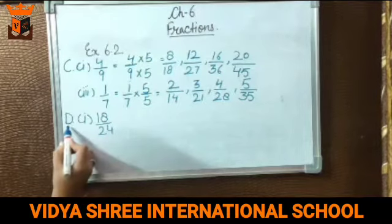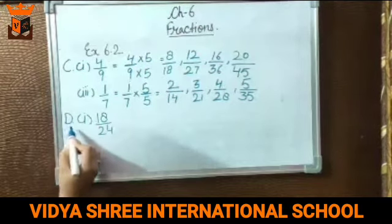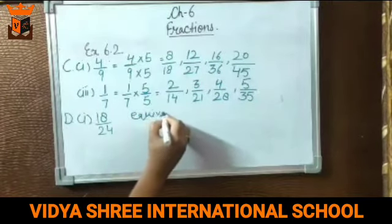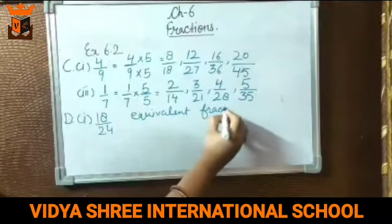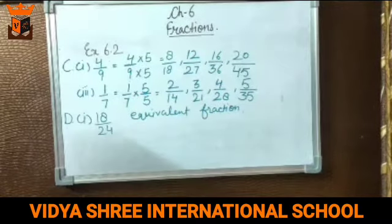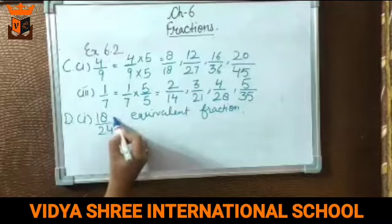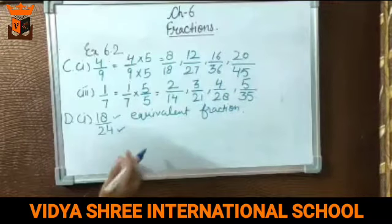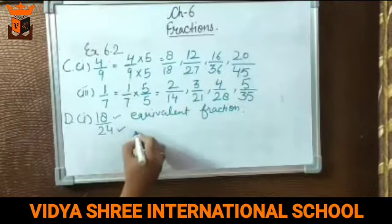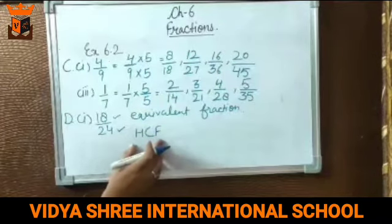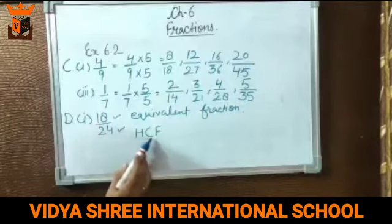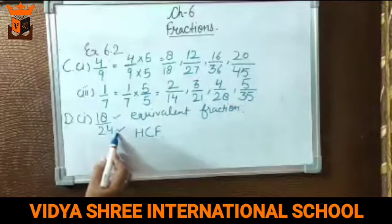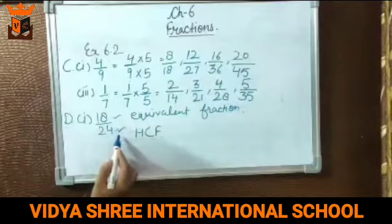In part D, we have 18 by 24. Given fraction ka equivalent fraction nikalna hai, but we have to find it by dividing — hame yahan divide karna hoga. We will find the highest common factor of 18 and 24. Aapne 5th chapter mein highest common factor ke baare mein padha hai. The factors of 18 are: 1, 2, 3, 6, 9, and 18. The factors of 24 are: 1, 2, 3, 4, 6, 8, 12, and 24.